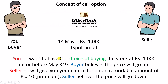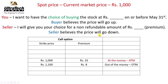Now I am going to take this sentence and proceed with the video. I have deleted the strike price and premium values from the sentences so that we can fill them in. The sentence now reads: I want to have the choice of buying the stock at dash rupees on or before May 31st. And: I will give you the choice for a non-refundable amount of rupees dash. We have to fill in the strike price and premium in those blanks.